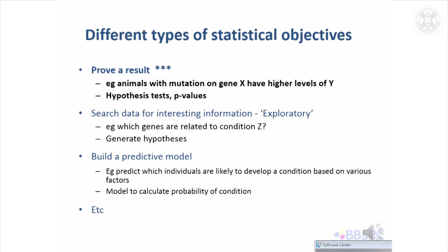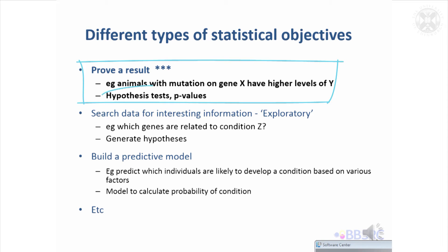There are different things you might want to do with a set of data to get some information out of it. You might be in a situation where you think something's the case and you want to prove it — it adds a lot of weight if you can prove it statistically. That's what we're going to be thinking about today. The usual way of proving something is to do what's known as a hypothesis test, and the critical thing you get out of that is a p-value.